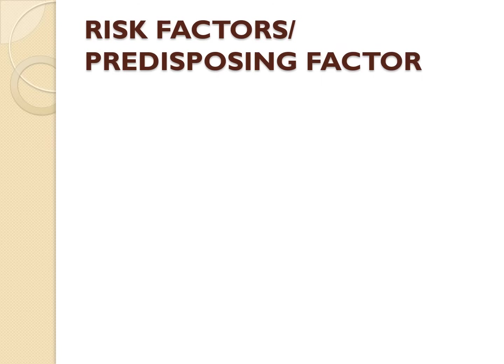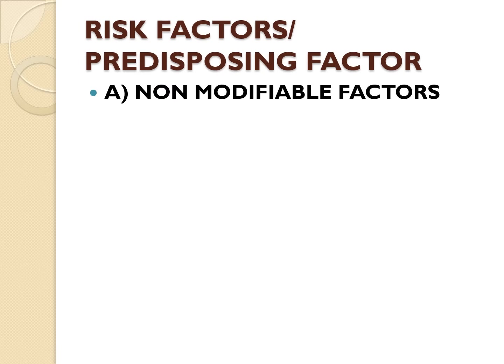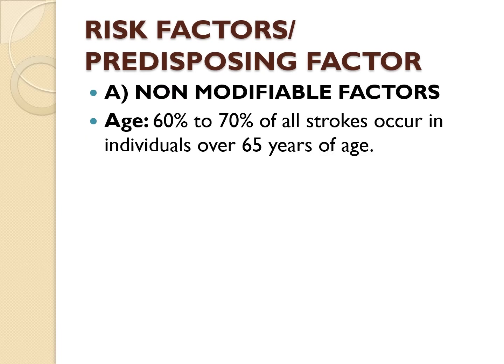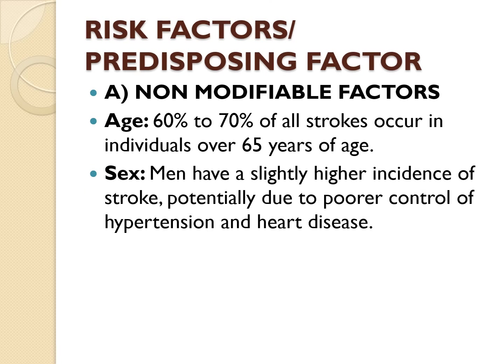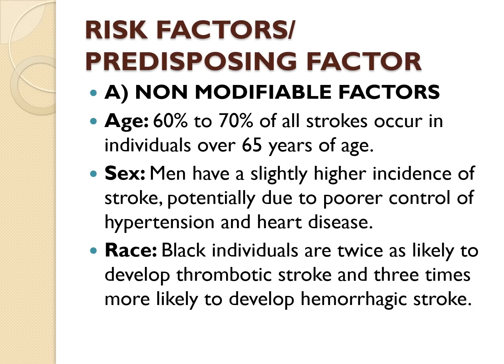Let's start by looking at the non-modifiable factors. We have age — about 70 percent of all strokes occur in persons over 65 years of age. Then sex — men have a slightly increased incidence of stroke, possibly because of poor control of hypertension and heart diseases. Race is also another non-modifiable factor; blacks are twice as likely to develop thrombotic stroke and three times more likely to develop hemorrhagic stroke.